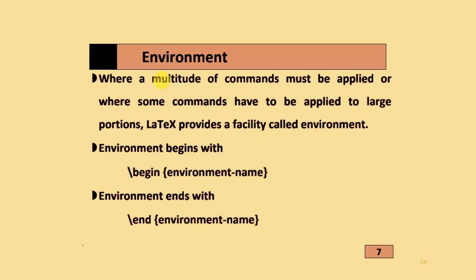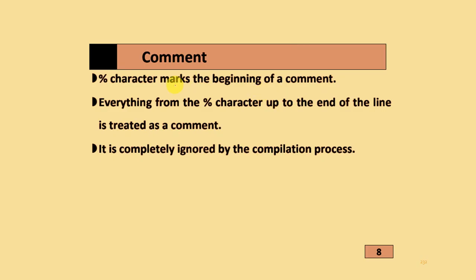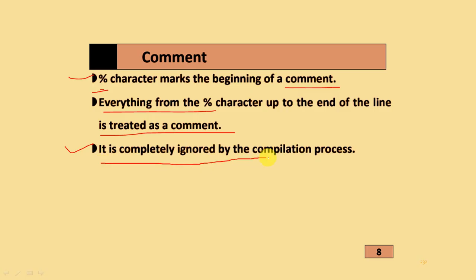Regarding environments: where a multitude of commands must be applied to large portions of text, LaTeX provides a facility called an environment. An environment begins with \begin followed by the environment name, and ends with \end followed by the environment name. The percentage character marks the beginning of a comment — everything from the percentage character to the end of the line is treated as a comment and is completely ignored by the compilation process.